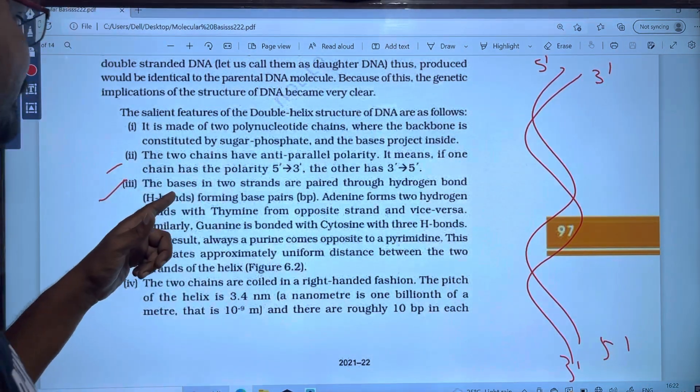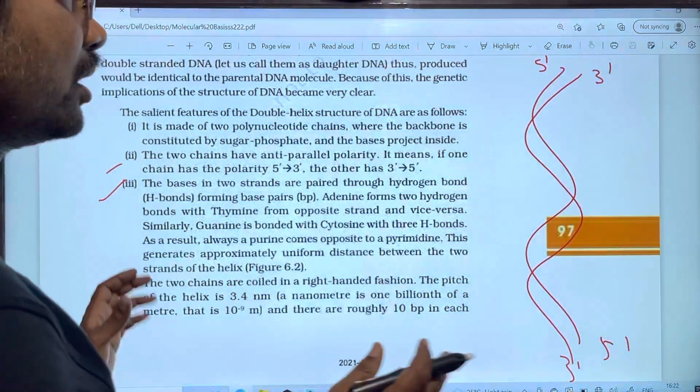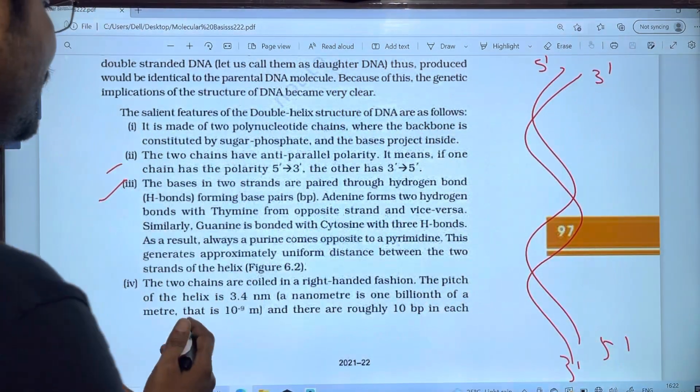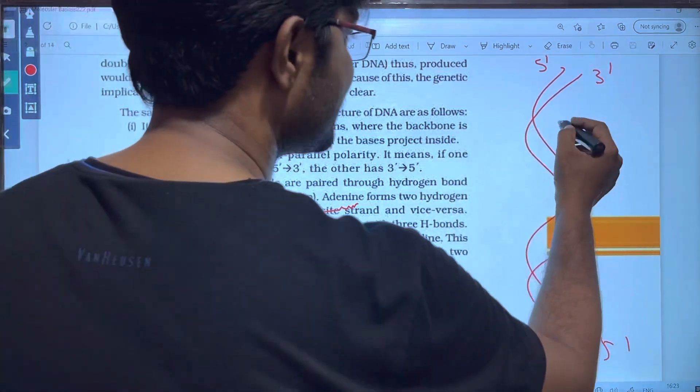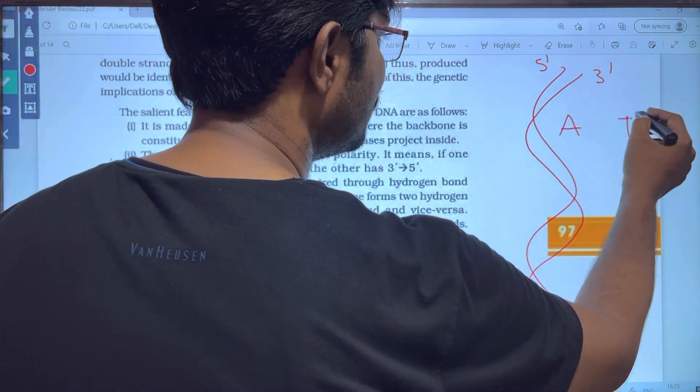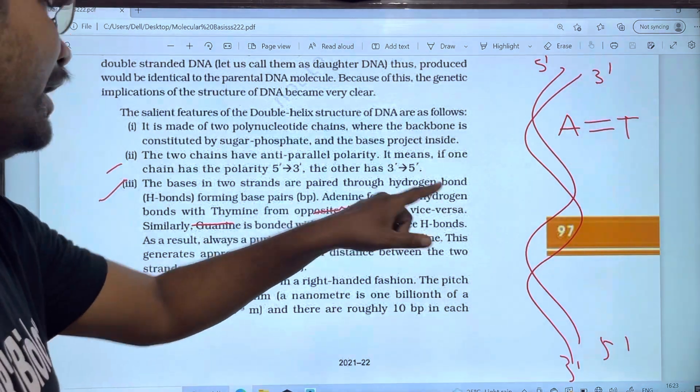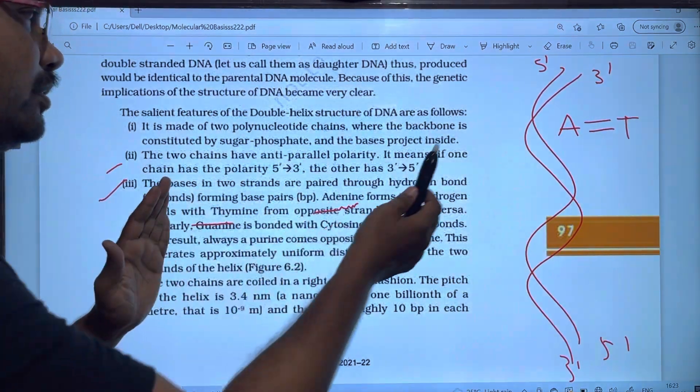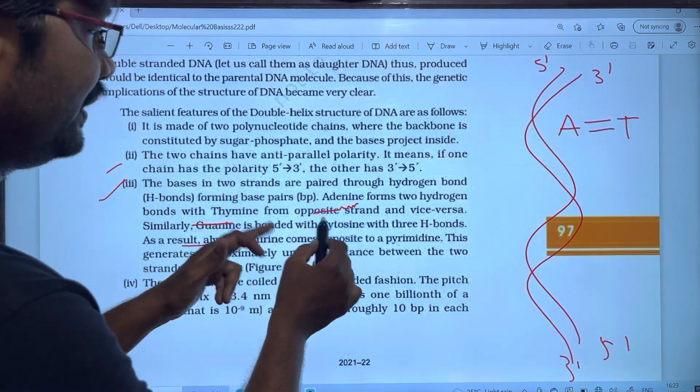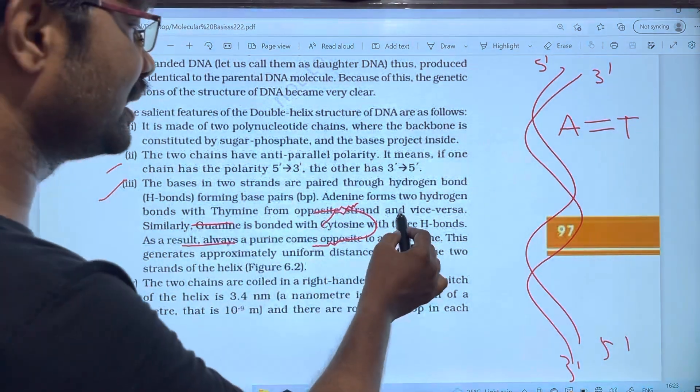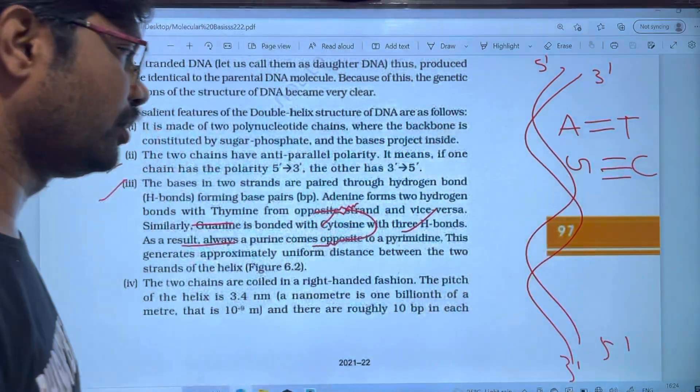The bases of the two strands are paired together by hydrogen bonds. Adenine forms two hydrogen bonds with thymine from the opposite strand. Similarly, guanine is bonded with cytosine with three hydrogen bonds.